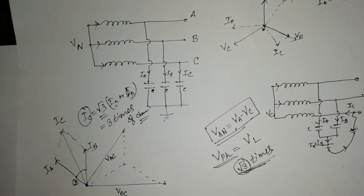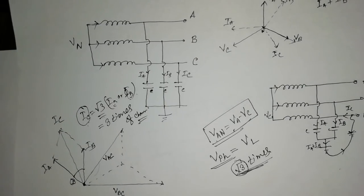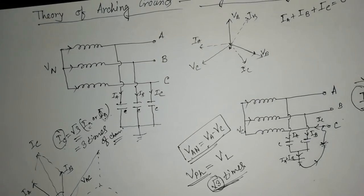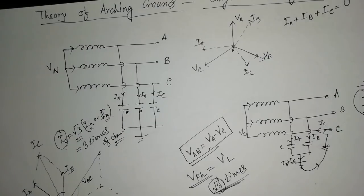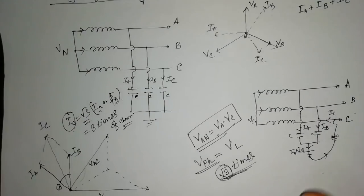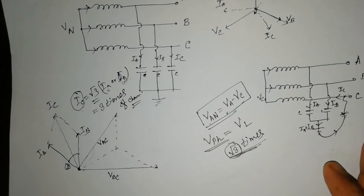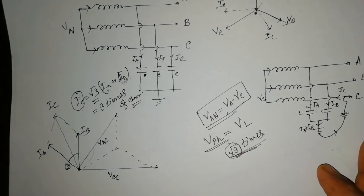This phenomenon is known as arcing ground, and it is very important to understand. That is why it is very important to ground the system. By using a Peterson coil, you can eliminate the arcing ground. I hope this is clear. Thank you for watching my video.